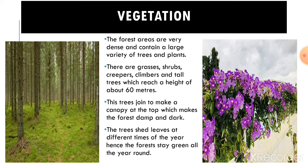As this region receives rainfall throughout the year, the country is rich in vegetation. The forest areas are very dense and contain a large variety of trees and plants. There are grasses, shrubs, creepers, climbers, and tall trees which reach a height of about 60 meters. These trees join to make a canopy at the top, which makes the forest dim and dark. Canopy means branches and leaves that spread out at the top of a group of trees, forming a type of roof. The trees shed leaves at different times of the year; hence, the forests stay green all year round.